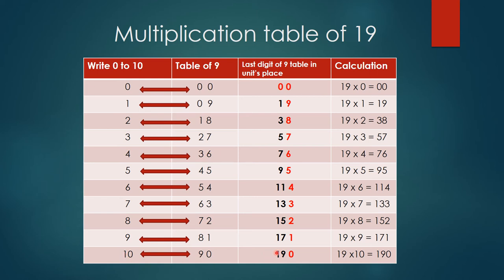This column is the table of 19. Let's see the actual calculations: 19×0=0, 19×1=19, 19×2=38, 19×3=57, 19×4=76, 19×5=95, 19×6=114, 19×7=133, 19×8=152, 19×9=171, and 19×10=190.